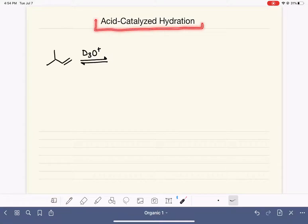Acid-catalyzed hydration is a type of addition reaction. In addition reactions, we are adding a molecule to an alkene. And in the acid-catalyzed hydration reaction, the molecule that we are adding to the alkene is water.